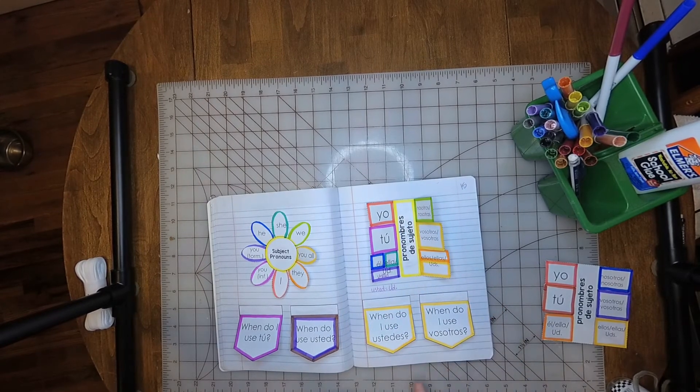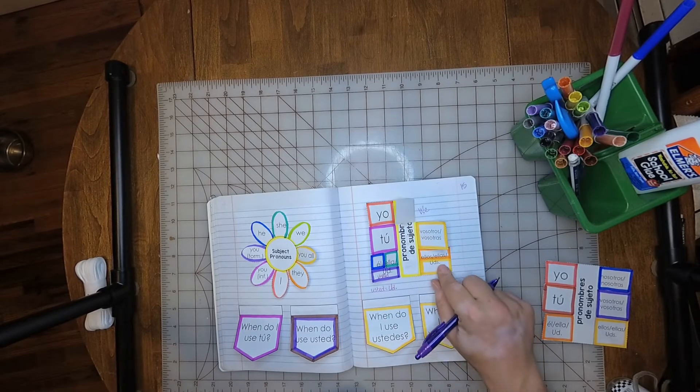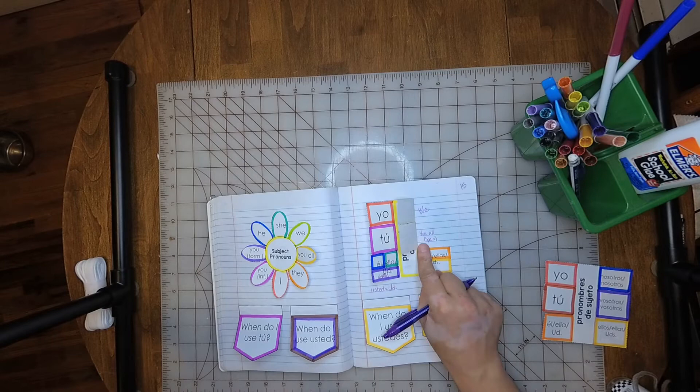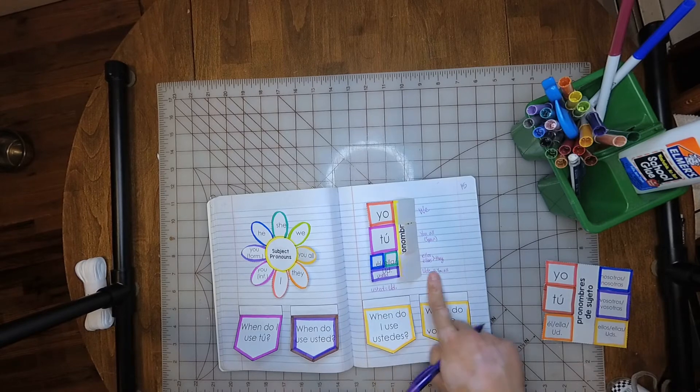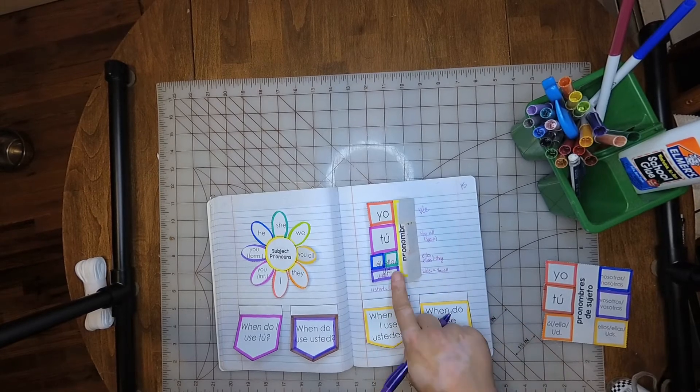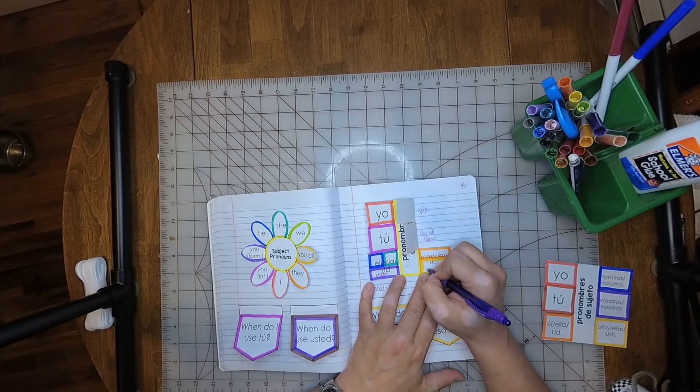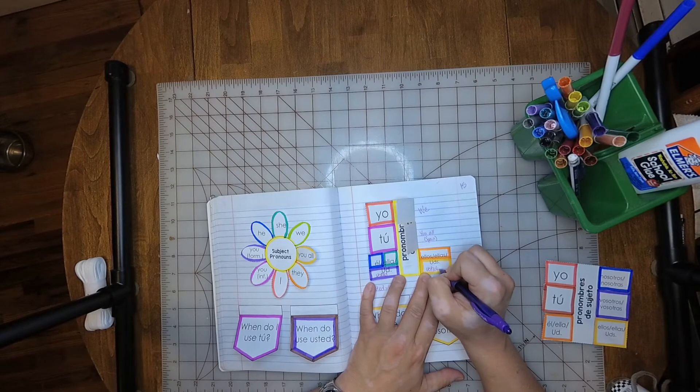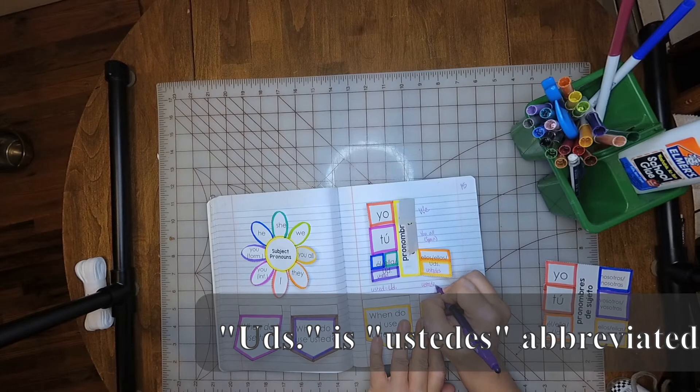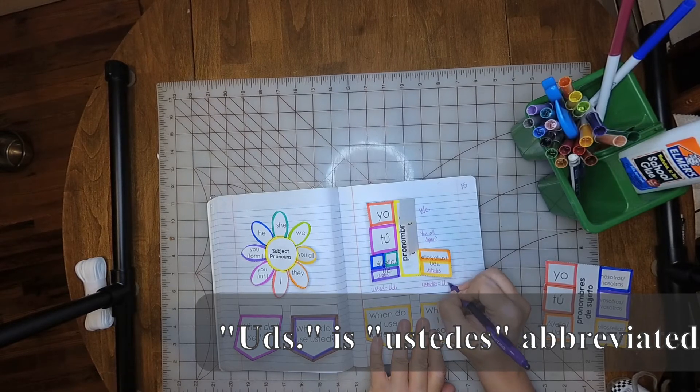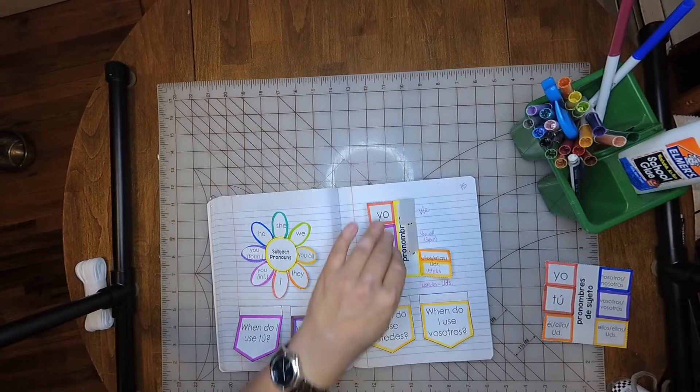So now, to recap this side, nosotros, nosotras is we, vosotros, vosotras is you all in Spain. And ellos, ellas, ustedes, they and you all. Underneath UDS, I'm going to write in ustedes. And, just like I did for usted, I'm going to spell out the abbreviation for ustedes.